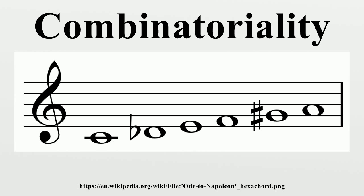Transpositional combinatoriality is the lack of shared pitch classes between a hexachord and one or more of its transpositions. For example, 0-2-4-6-8-T and its transposition up one semitone, 1-3-5-7-9-E, have no notes in common. Retrograde hexachordal combinatoriality is considered trivial, since any set has retrograde hexachordal combinatoriality with itself.